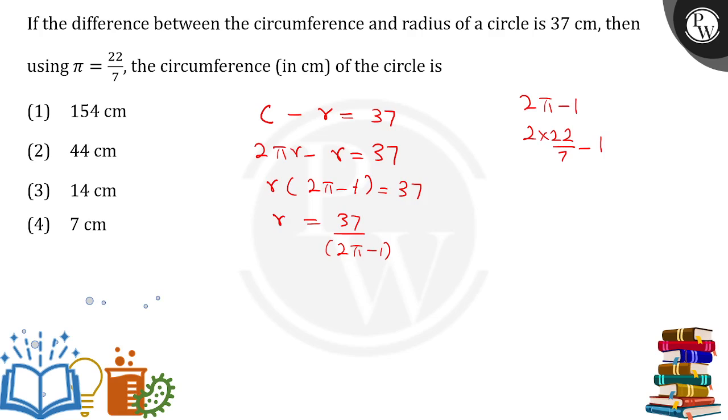This becomes 44/7 - 1, which is (44 - 7)/7 = 37/7.